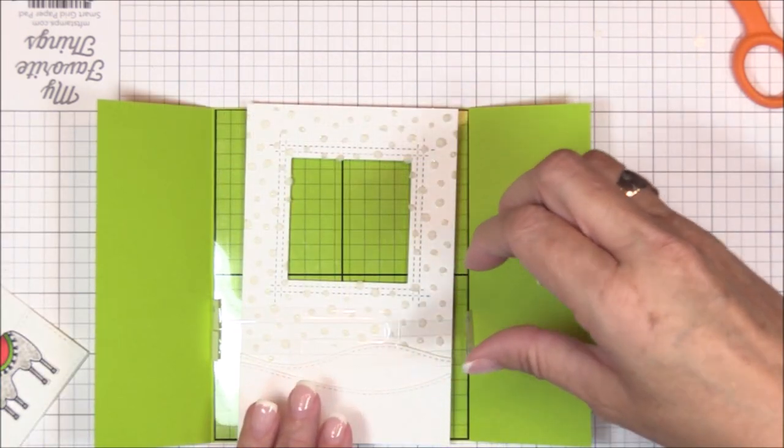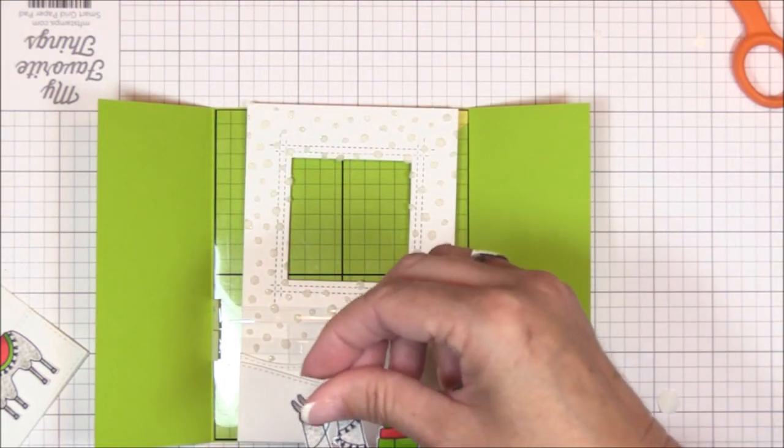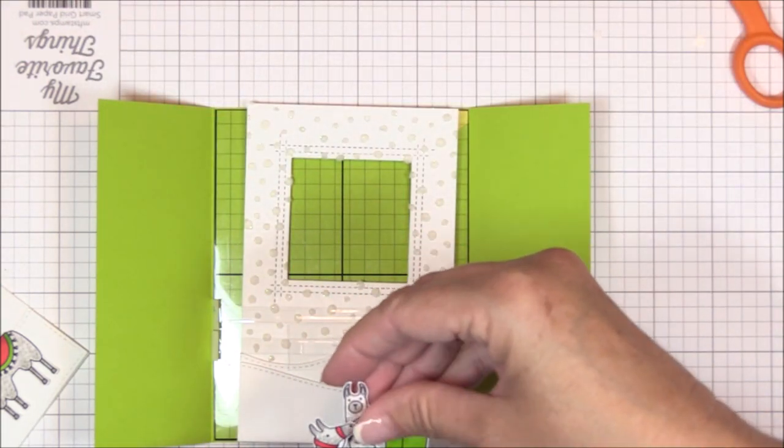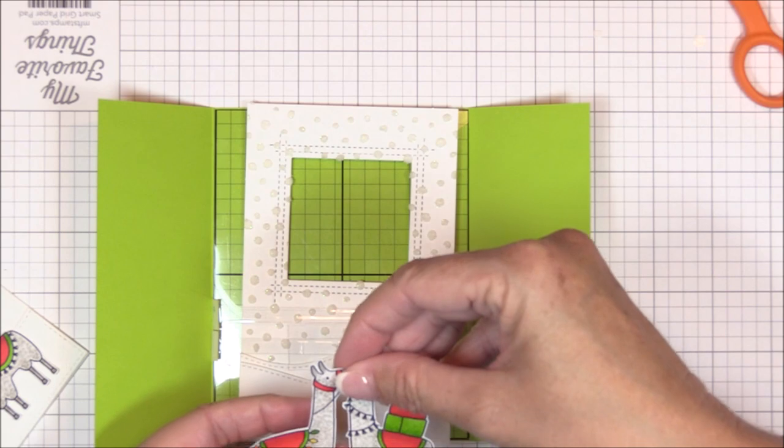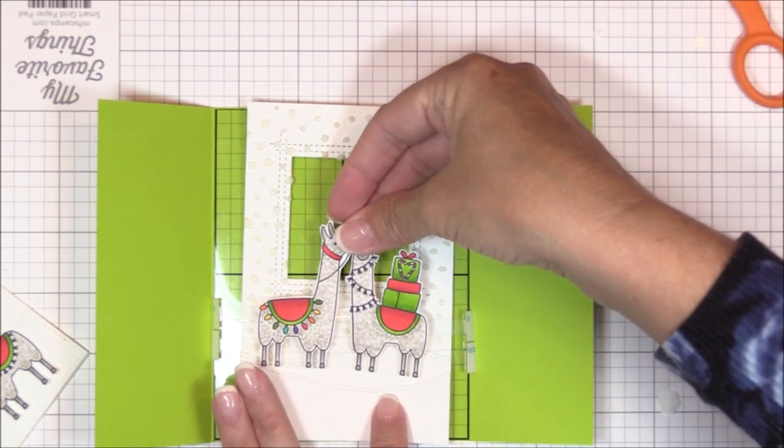I've trimmed an aperture interior panel that measures three and a half inches wide by five and a half inches high and I die cut an aperture using the square peekaboo window dynamics. I've slid this behind the mechanism to help me align everything before I adhere it.